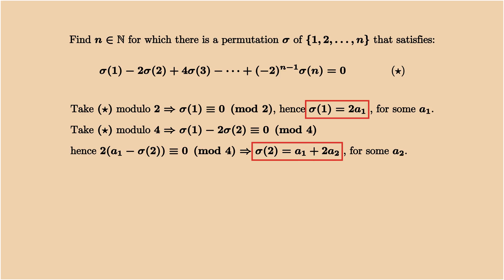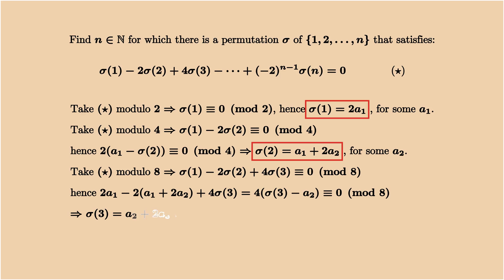Now let's do it again. We take modulus 8 and replace sigma 1 and sigma 2 into the equation. What we get is sigma 3 must have the same parity as a2. So sigma 3 can be written as a2 plus 2a3.